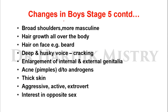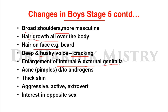In Stage 5 for boys: shoulders become broad and more masculine, hair growth all over the body, hair on the face such as the appearance of a beard, deep and husky voice (cracking of voice), enlargement of internal and external genitalia, pimples due to androgen release, changes on the skin, thick skin, aggressive, active and extrovert behavior, and interest in the opposite sex develops as puberty approaches.